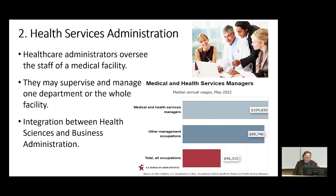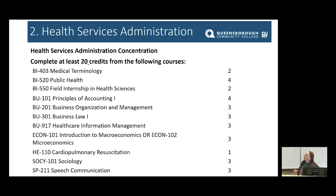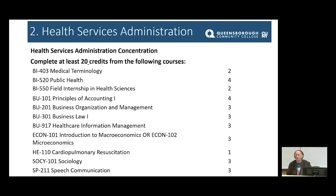For the Health Services Administration concentration, you'd need 20 credits from a bucket that includes courses like public health, accounting, business law, business organization and management, macroeconomics, microeconomics, and sociology — no hard sciences in that listing. Pass this information to friends who dropped out of A&P; there are other opportunities available to them.